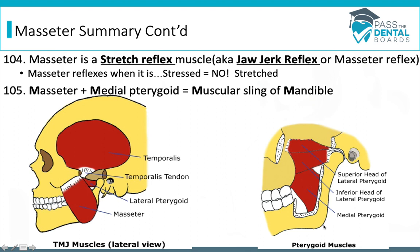If you imagine the border of the ramus as your arm, the two muscles on either side are the sling. The muscular sling of the mandible is going to be the two M muscles — the masseter and the medial pterygoid.